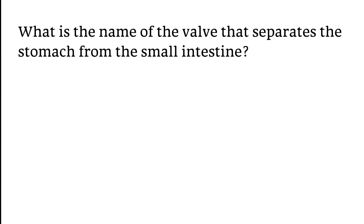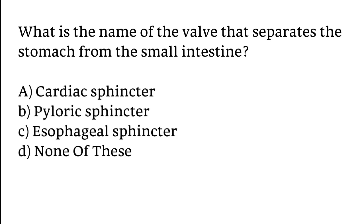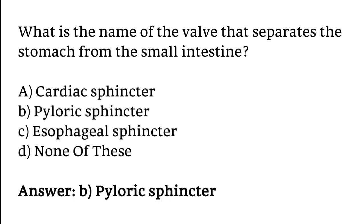What is the name of the wall that separates the stomach from the small intestine? Cardiac sphincter, pyloric sphincter, esophageal sphincter, none of these? The correct answer is option B. Pyloric sphincter is the name of the wall that separates the stomach from the small intestine.